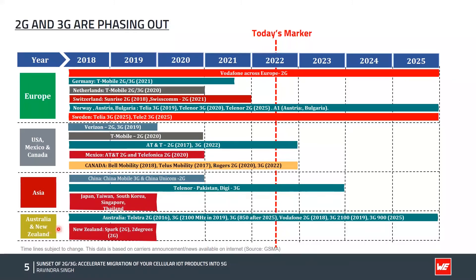The same goes with Australia and New Zealand, where many operators have decided to switch off 2G and 3G by 2025. So at a broader level, after 2025 it is expected that there will not be much coverage for 2G and 3G technologies, and only 4G and 5G will grow in number of connections.